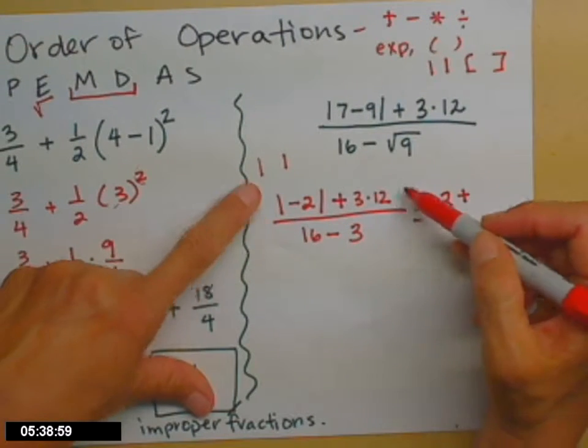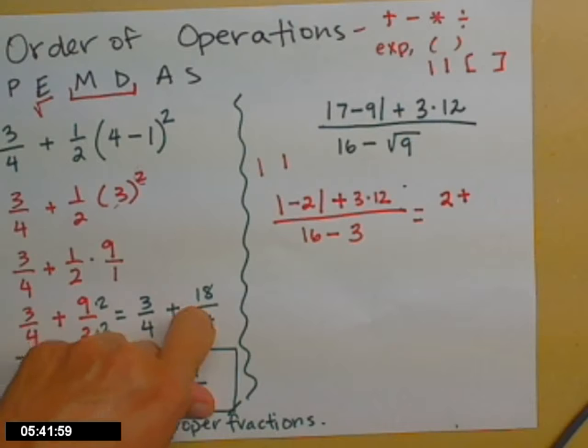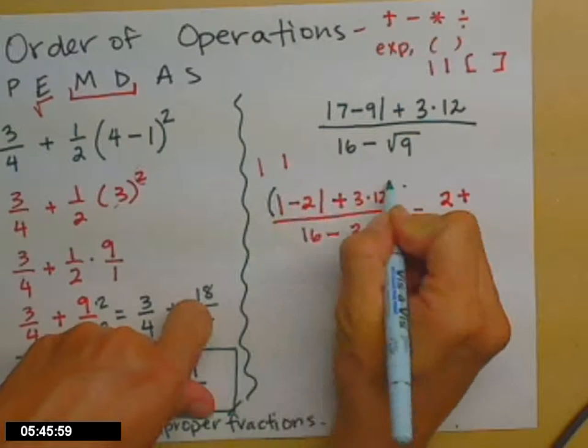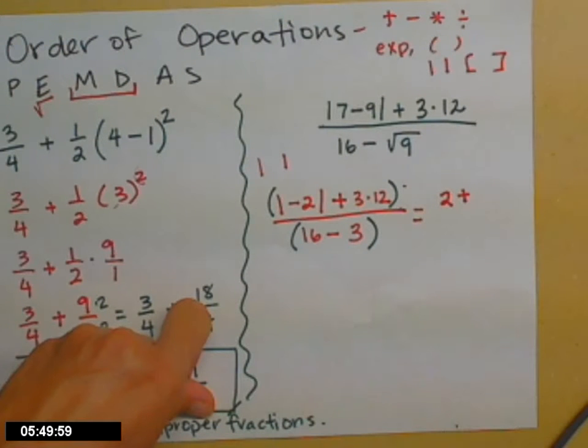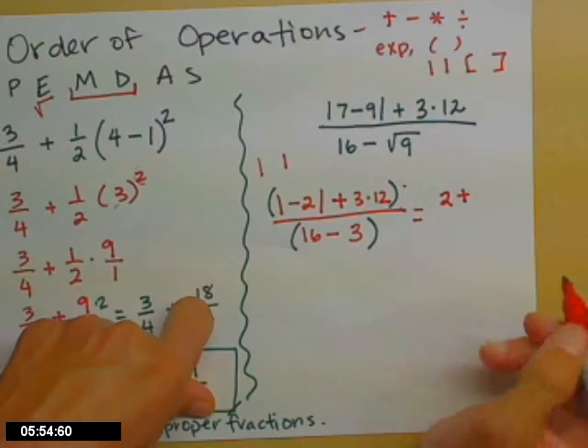And the numerator of a fraction, essentially, even though it's not written, get ready for it, has parentheses assumed. Same thing with the denominator. Those are implied grouping symbols. So you do clean up the top, clean up the bottom, and then we'll worry about the division.